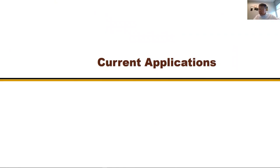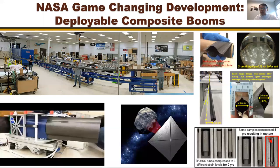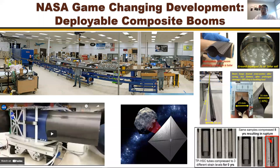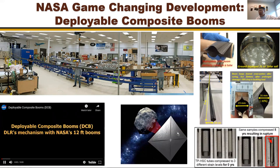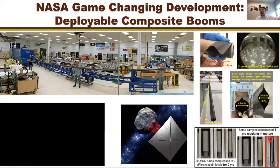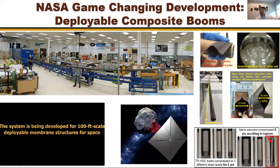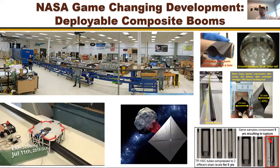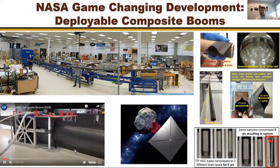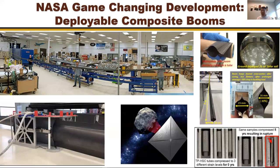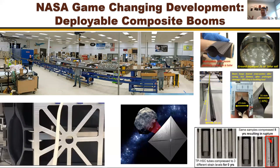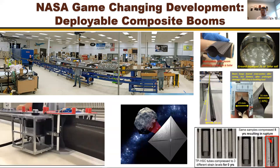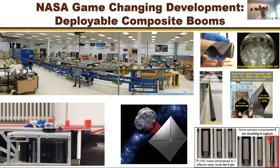Let's move to applications. First, we designed and analyzed composite booms for NASA. These are very long structures, and if you look at the cross-section, they're made of composites with a complex omega geometry. On the ground, the boom is stored in a coiled, packed configuration.